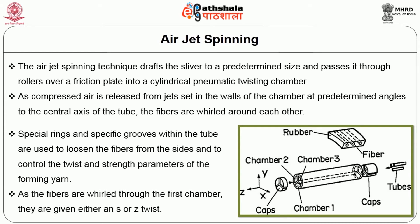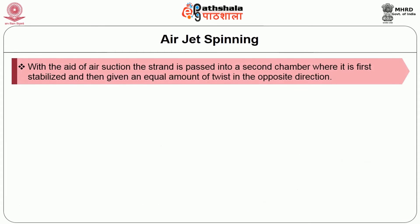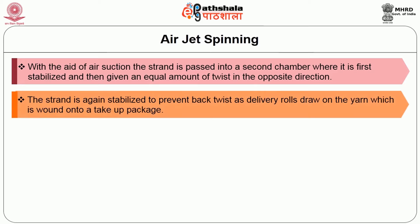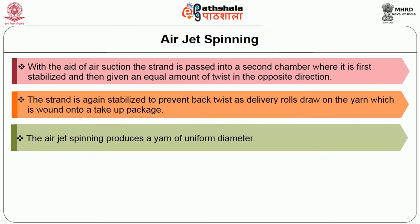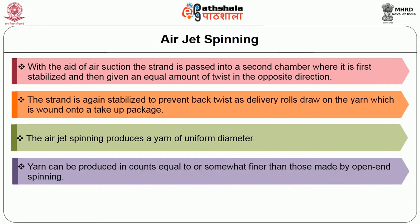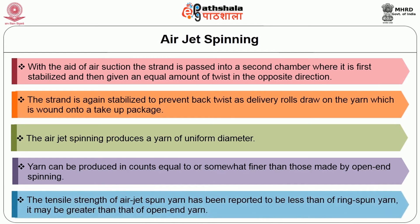As the fibers are whirled through the first chamber, they are given either an S or Z twist. With the aid of air suction, the strand is passed into a second chamber where it is first stabilized and then given an equal amount of twist in the opposite direction. The strand is again stabilized to prevent back twist as delivery rolls draw the yarn, which is wound onto the take-up package. Airjet spinning produces a yarn of uniform diameter. Yarn can be produced in counts equal to or somewhat finer than those made by open-end spinning. The tensile strength of airjet spun yarn has been reported to be less than that of ring spun yarn, but may be greater than that of open-end yarn.